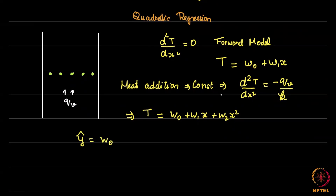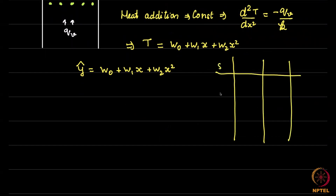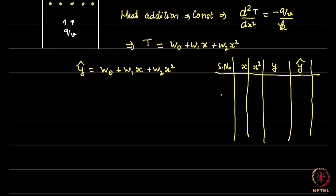We are going to say we have a case — not just the slab but some general case — where we have w₀ + w₁x + w₂x². The rest of the process remains the same, in that we still make a table with serial number, x, y, ŷ, and maybe an extra column for x². We calculate ŷ and the corresponding error, which is y minus ŷ.